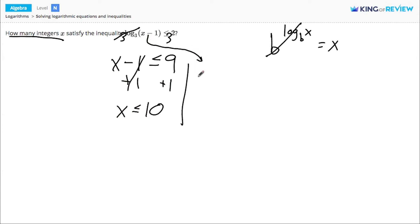The number inside of a log, in this case x minus 1, can't be 0 or a negative number. In other words, it must be positive. If we add 1 to both sides of this problem, we see that x has to be greater than 1.